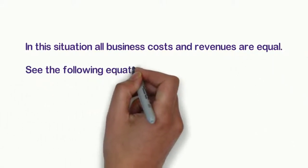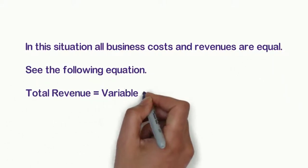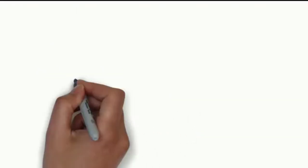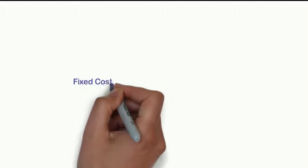See the following equation: Total revenue equals variable cost plus fixed costs. Let's discuss what are fixed and variable cost.